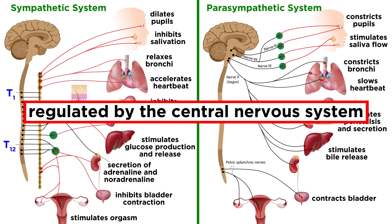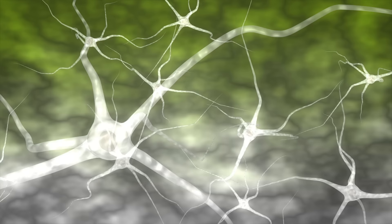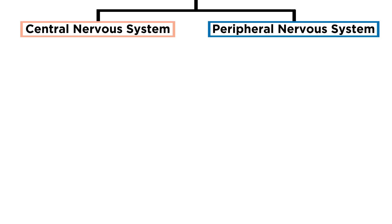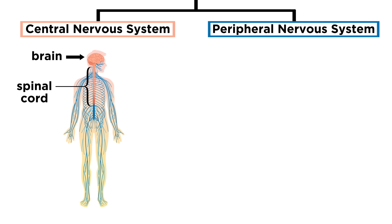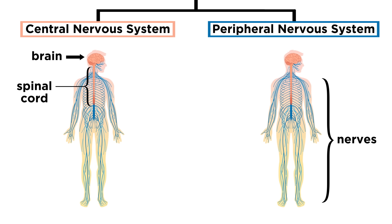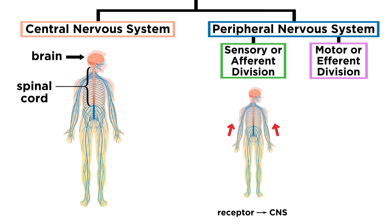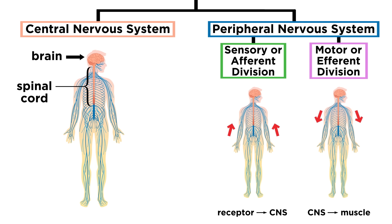All the activity in the autonomic nervous system is regulated by components of the central nervous system. Let's quickly review the divisions of the nervous system. The nervous system is divided into the central nervous system — the brain and spinal cord — and the peripheral nervous system, which is everything else. This is divided into the sensory, or afferent division, which goes from sensory input to the brain, and the motor, or efferent division, which goes from the brain to whatever the brain needs to control.